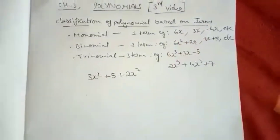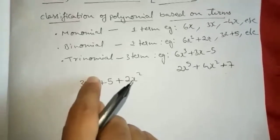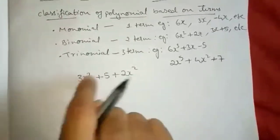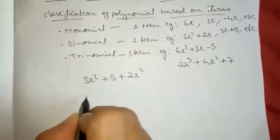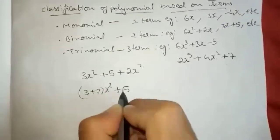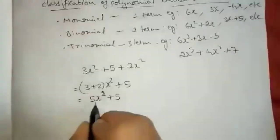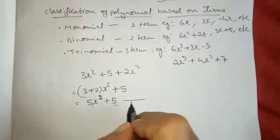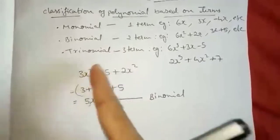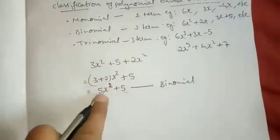But it is wrong. Because see here, these two are like terms — variable having same power. This is also same variable having same power: x square and x square. So these two terms we can add. We take x square as common — 3 plus 2 — then plus 5. 3 plus 2 is 5, so 5x square plus 5. Now how many terms are there? Only two terms. Two terms means it is a binomial.